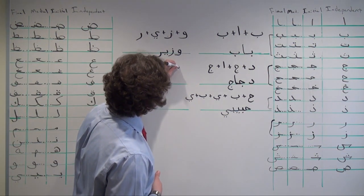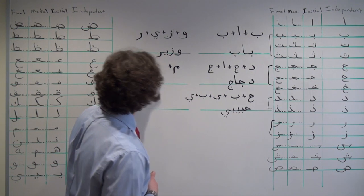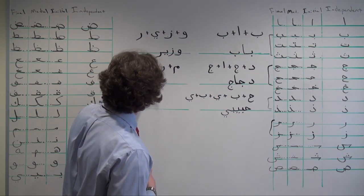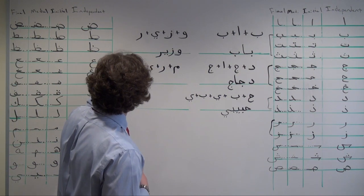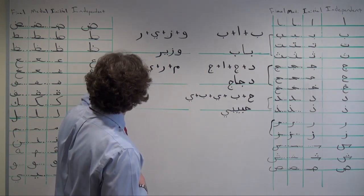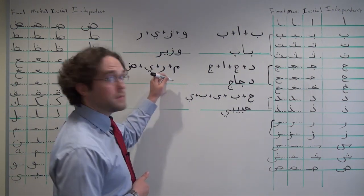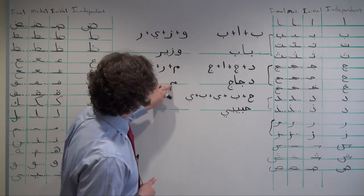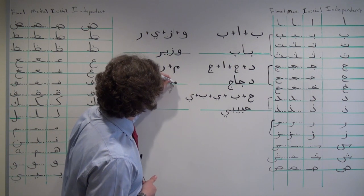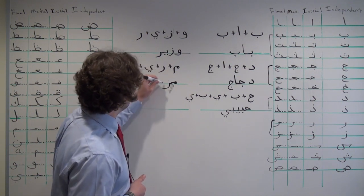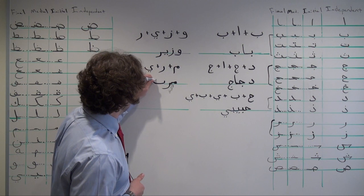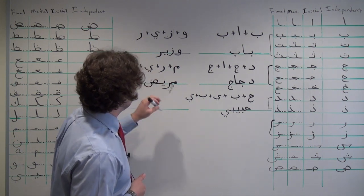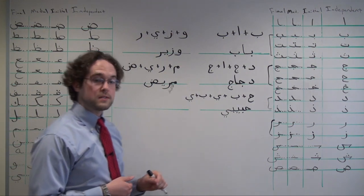How about another? Meem, ra, ya, ba. Meem in initial form. Meem connects to ra, ya, ba. مريض, which means sick.